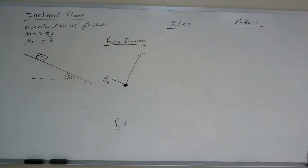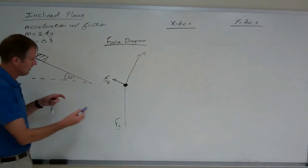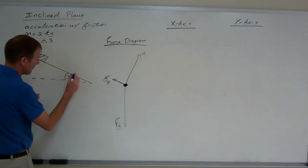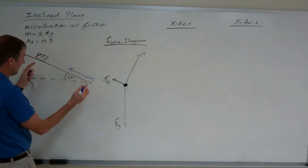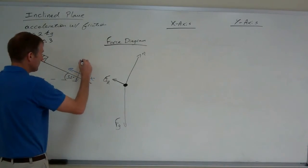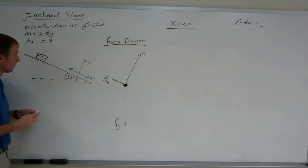Let me grab a different color. I need to resolve the weight vectors. Remember, you tilt the axis. So that's the x-axis, the parallel axis. And this is the y-axis perpendicular to the ramp.